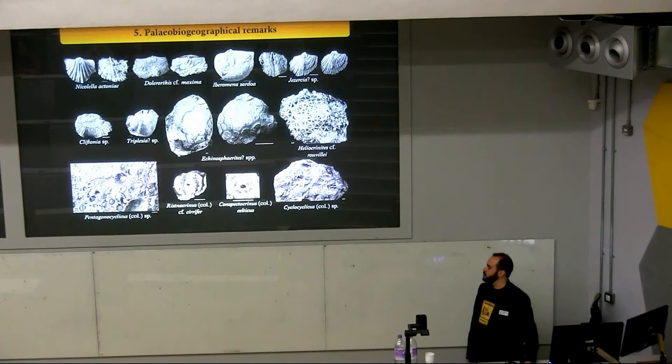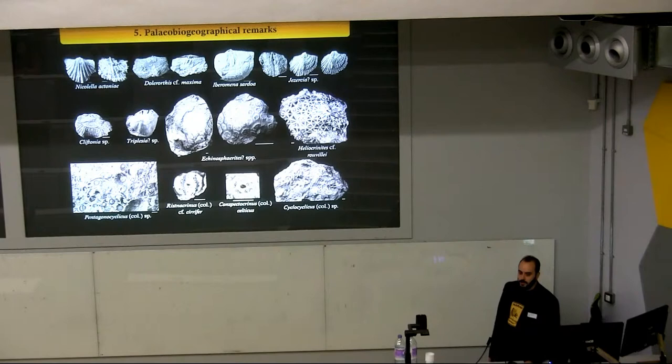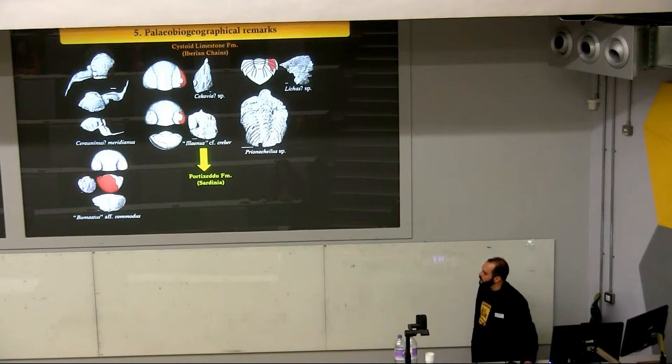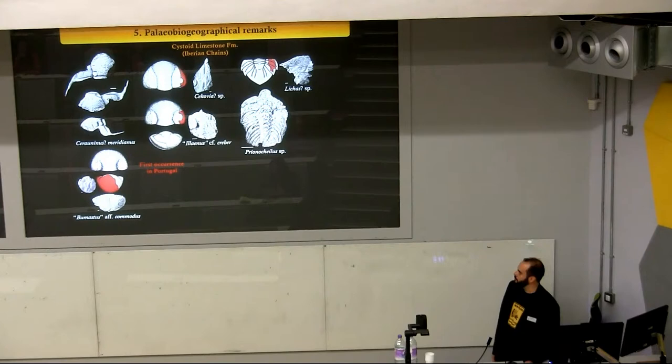Many of the brachiopods and echinoderms found here are almost represented in most of the Upper Ordovician formations in the Mediterranean Province after the Boda event. But the trilobites, for example, are almost exclusively represented in only one formation — the cystoid limestone formation from the Iberian Chains — excepting Illaenus kreber, which is also present in the Portichedo Formation from Sardinia. It is also remarkable that the presence here of Xaraurinus and Bumastus represents the first occurrence of these taxa in Portugal.